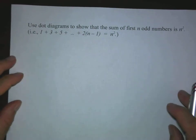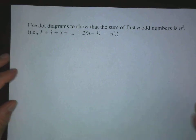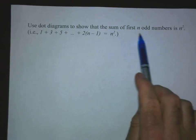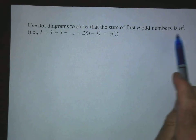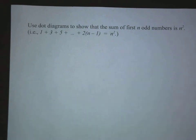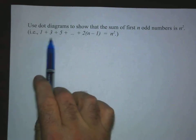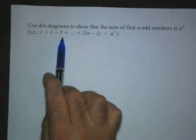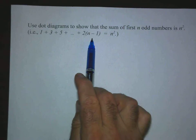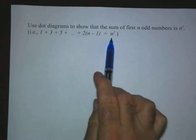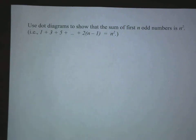New project: use dot diagrams to show that the sum of the first N odd numbers is N squared. So in the general case, 1 plus 3 plus 5 dot dot dot plus the Nth odd number is equal to N squared. That's what we want to show using our dot diagrams.